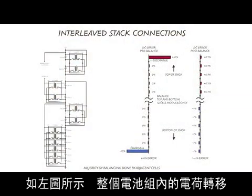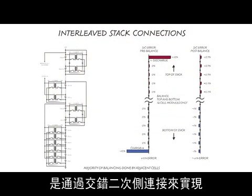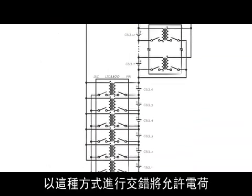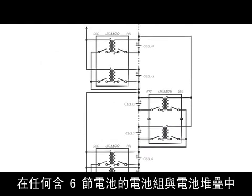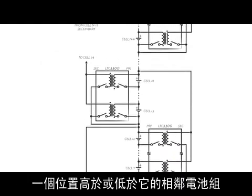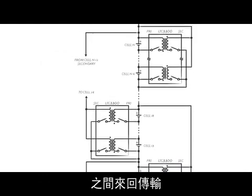Transferring charge throughout the stack is achieved by interleaving the secondary side connections as shown in the left diagram. Interleaving in this manner allows charge from any group of six cells to be transferred to or from a group of adjacent cells, either above or below in the stack.